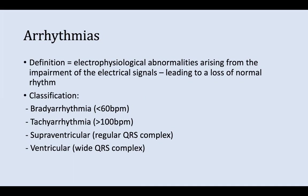The most important thing about arrhythmias is classification. Arrhythmias arise from pacemaker abnormalities, abnormal conduction pathways, conduction blocks, or ectopic impulse formations. The two main classifications are bradyarrhythmias and tachyarrhythmias. Positionally, you can have supraventricular and ventricular tachyarrhythmias. Supraventricular arrhythmias usually have a regular narrow QRS complex, whereas ventricular arrhythmias have wide QRS complexes.